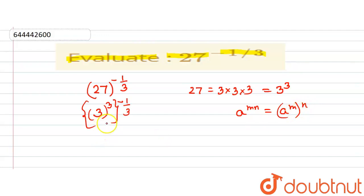So let us multiply these two. So the powers will get cancelled - 3 into minus 1 by 3. Here 3 will get cancelled, so we can write here 3 to the power of 3 into minus 1 by 3.